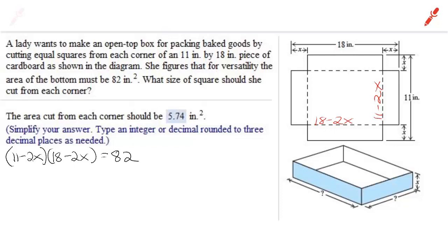Well, the bottom of the box is going to be 11 minus 2x times 18 minus 2x, because remember the x's were cut out. And length times width is area. So now I'm foiling 11 minus 2x times 18 minus 2x. And that gives me what you see here.